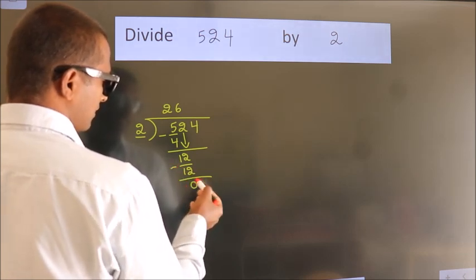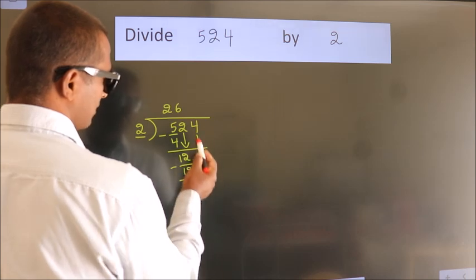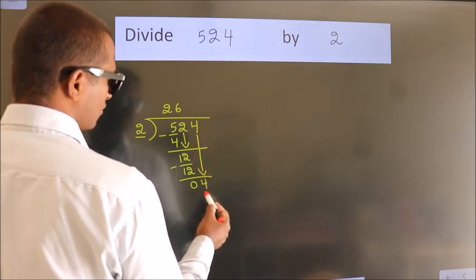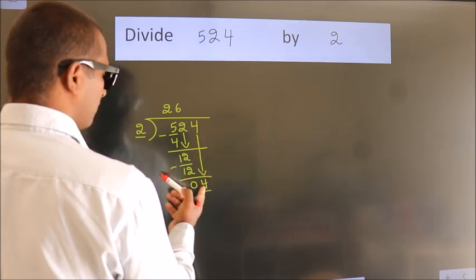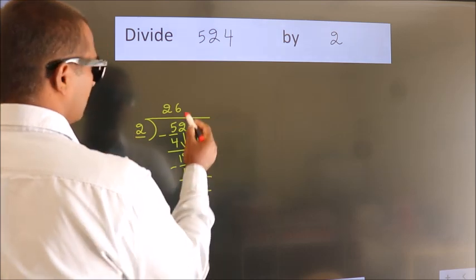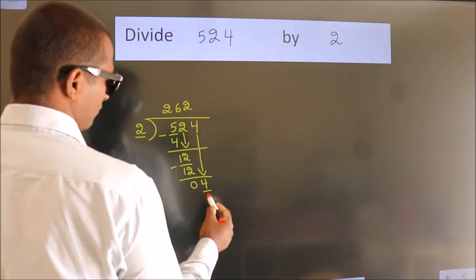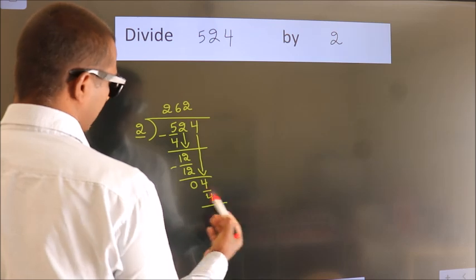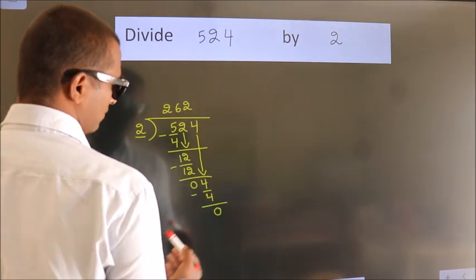After this, bring down the beside number. So 4 comes down, giving us 4. When do we get 4 in the 2 times table? 2 twos are 4. Now we subtract — we get 0.